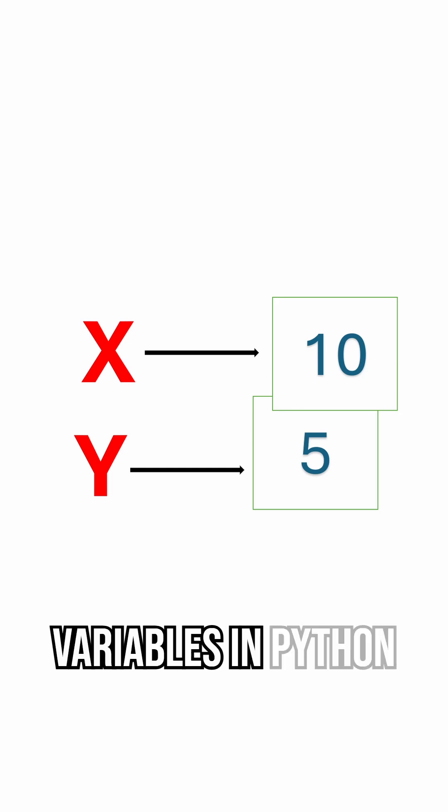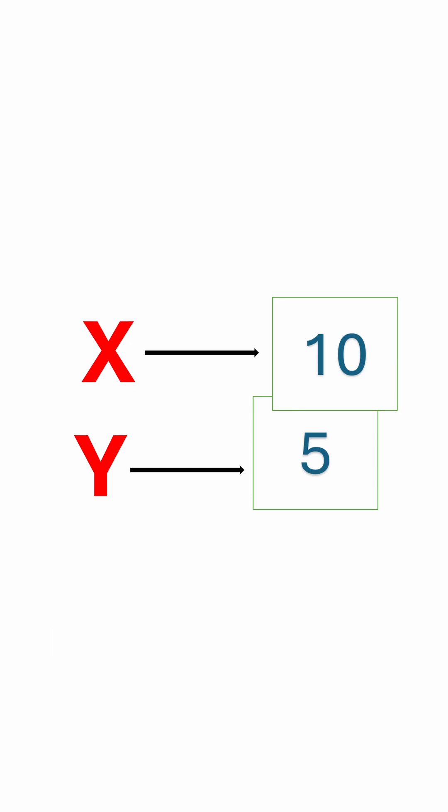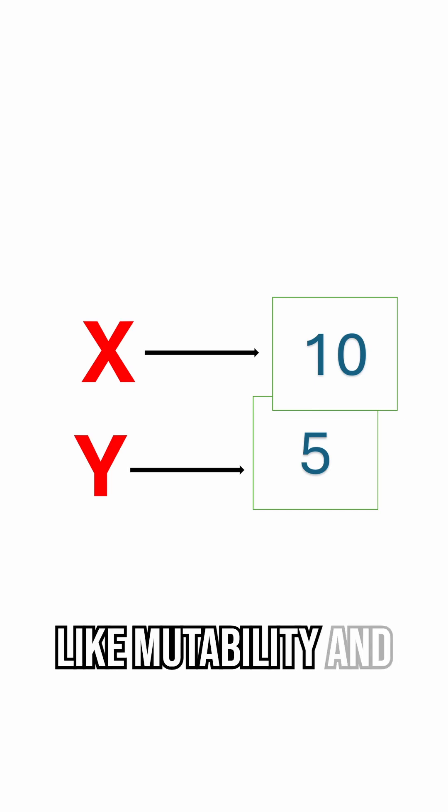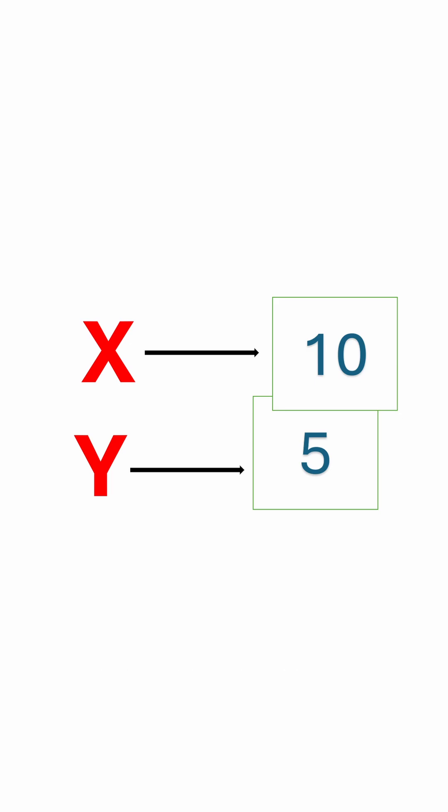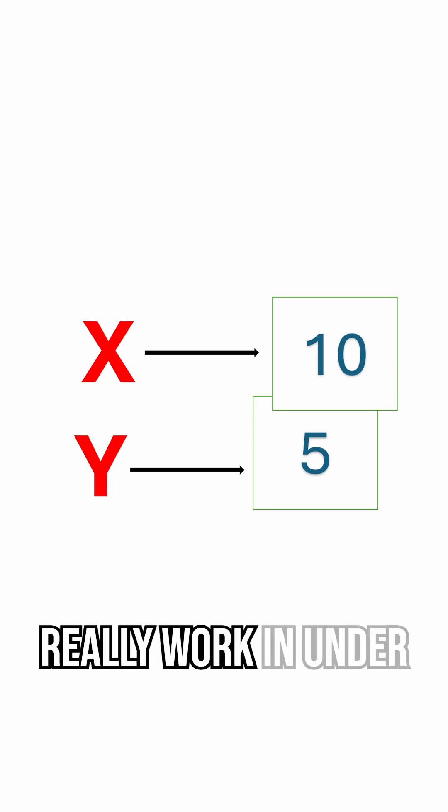So remember this. Variables in Python don't store values. They store references to objects. Understanding this will make concepts like mutability and identity much easier. And that's how Python variables really work in under a minute.